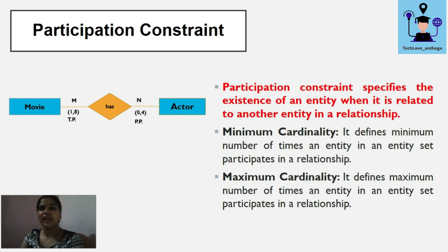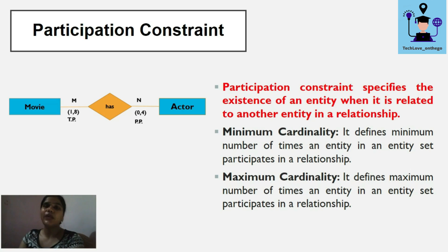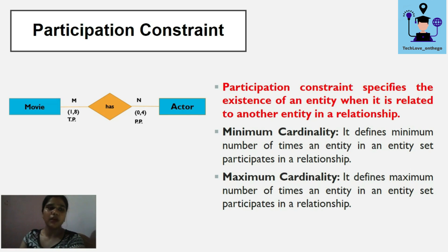Participation constraint specifies the existence of an entity when it is related to another entity in the relationship. It describes how one entity is related to another in a relationship set. There are two cases: minimum cardinality and maximum cardinality. Minimum cardinality defines the minimum number of times an entity participates in the relationship, and maximum cardinality defines the maximum.